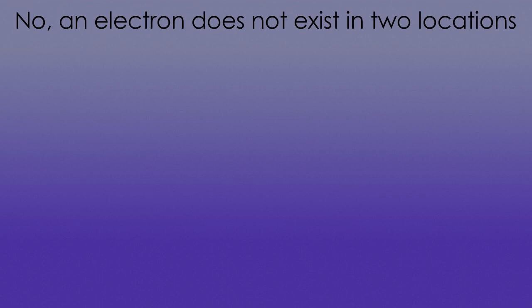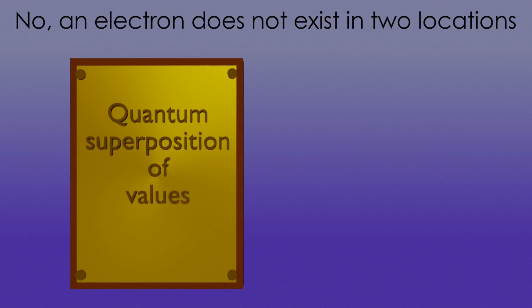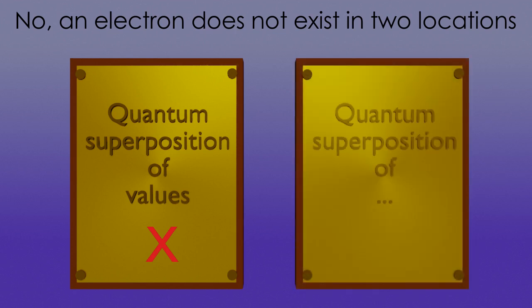No, an electron does not exist in two places at once. In quantum mechanics, we have a superposition of what exactly? Well, it's not a superposition of having several values at the same time. That's a common misconception. Instead, it's a superposition of measurement results.